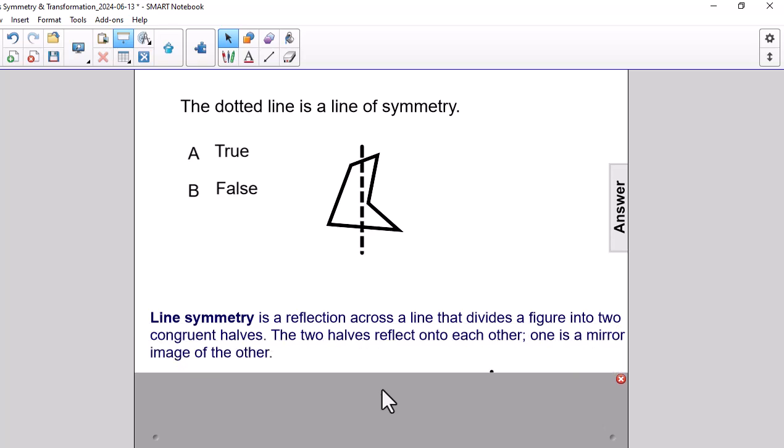Line symmetry is a reflection across the line that divides a figure into two congruent halves. The two halves reflect onto each other. One is a mirror image of the other.